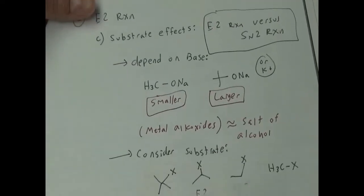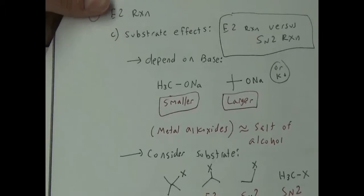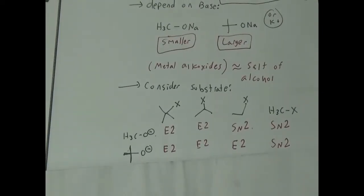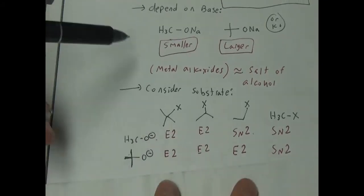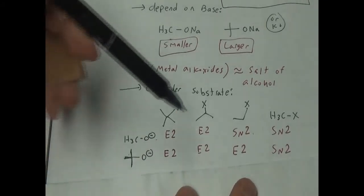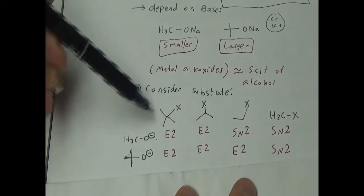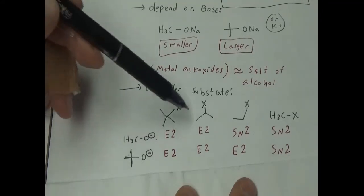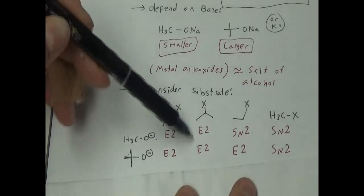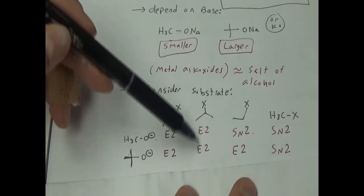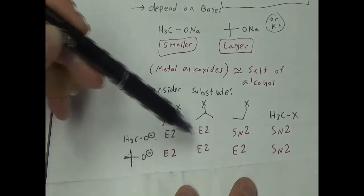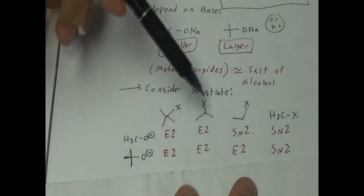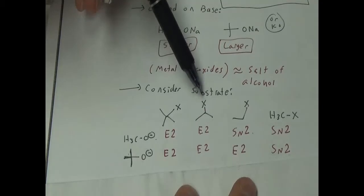If you have a larger alkoxide, the larger one we typically consider is tert-butoxide, like sodium tert-butoxide — these can be sodium or potassium — you get a different behavior. If you have a tertiary substrate, either of these will always give you E2 elimination. If you have a secondary substrate, they also always give you an E2 elimination — they always make alkenes.